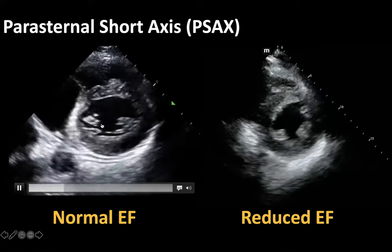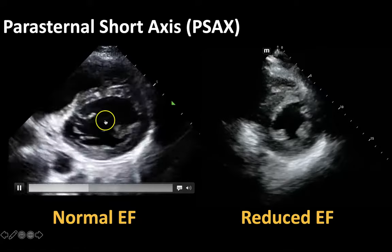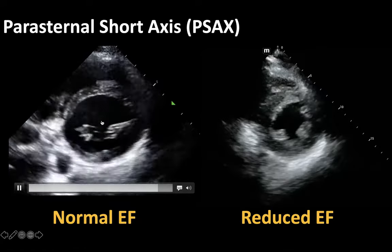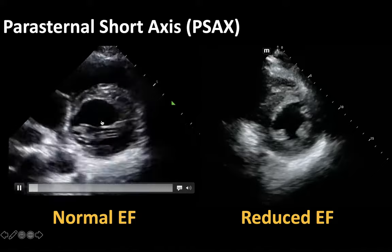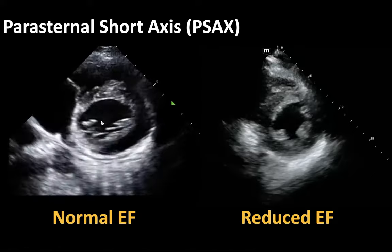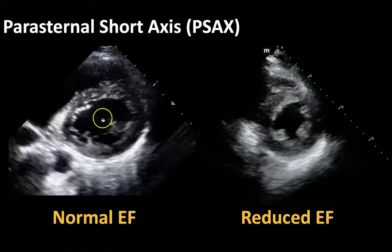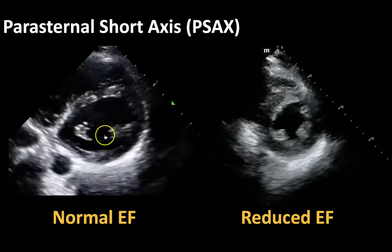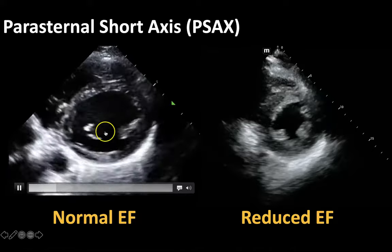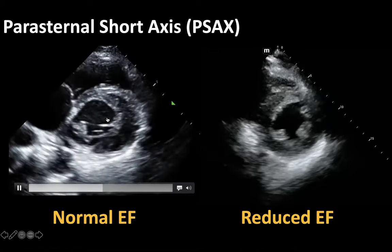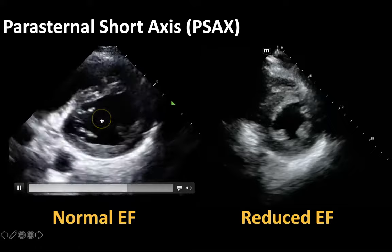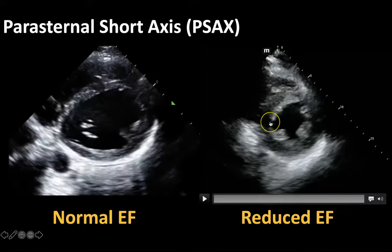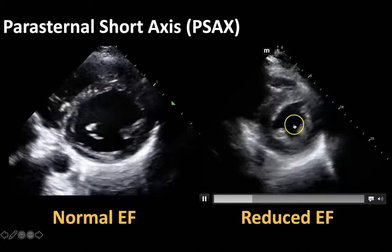Here you can picture putting your finger in the center of this left ventricle and seeing how well the walls come in towards that center to see how well it's squeezing. This heart on the left side of the screen has a normal ejection fraction because you can see that the walls are coming reasonably close to the middle of the screen.